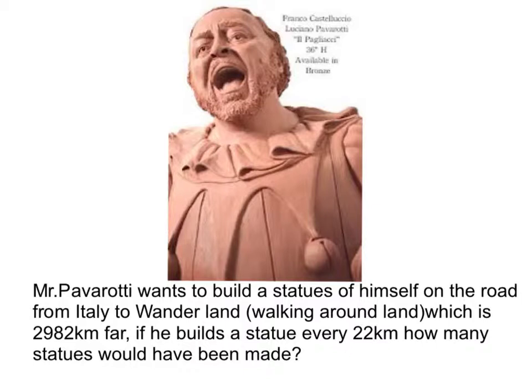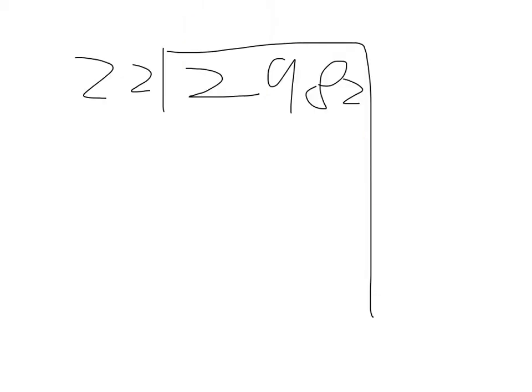how many statues would have been made? Let's figure it out. I'll be using partial quotient algorithm to figure it out. So, this is our dividend, and this is our divisor. Let's figure out the quotient.